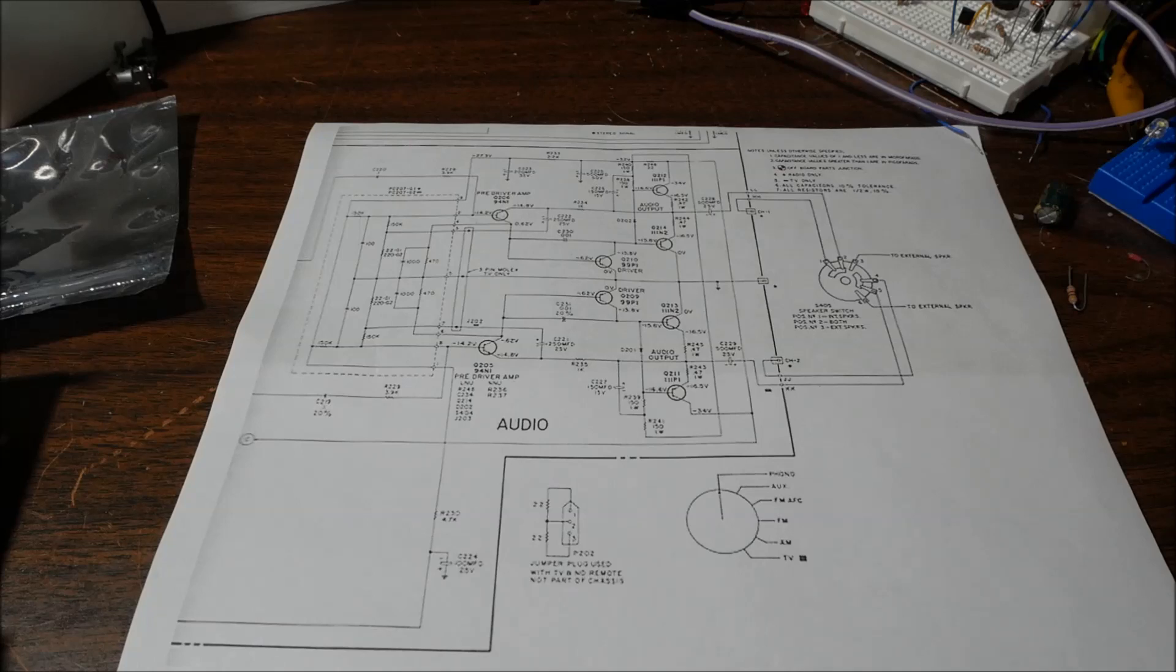This is an oddball because it uses different types of transistors in the output stage. It used a germanium PNP transistor and an NPN silicon transistor. So they're kind of mixing the breeds there, so to speak. I don't know how widespread this practice was, but I did find it used in a Magnavox Astrosonic console stereo.